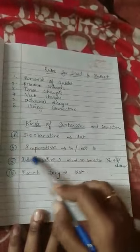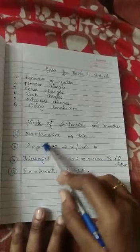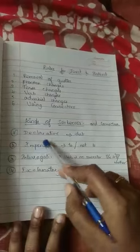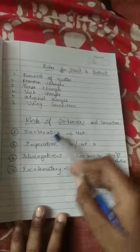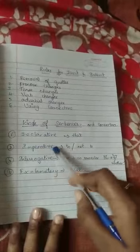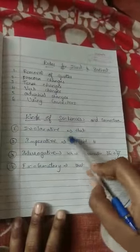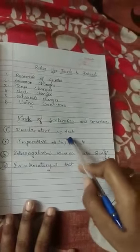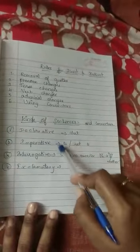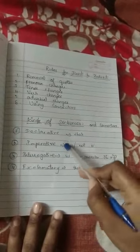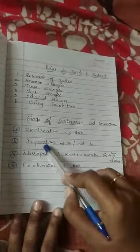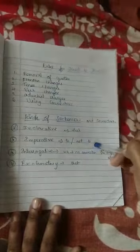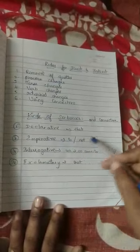Then imperative sentence. Imperative means an order or request. For example, orders: 'be quiet', 'don't talk', 'shut up'. Requests use 'please'. It is easy to identify because in open quotes, the verb will come first, not the subject. For imperative sentences, we have to use 'to' or 'not to'. When the sentence is positive, we use 'to', for example 'to pay the fees'. When it is negative like 'don't touch the fire', we use 'not to touch the fire'. So the imperative connector is 'to' and 'not to'.